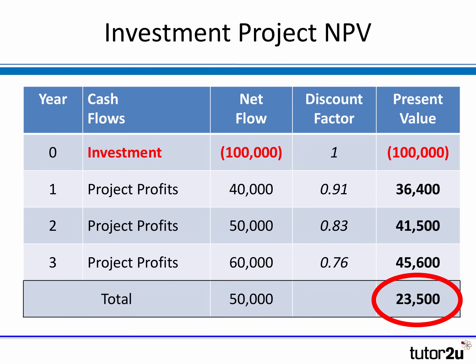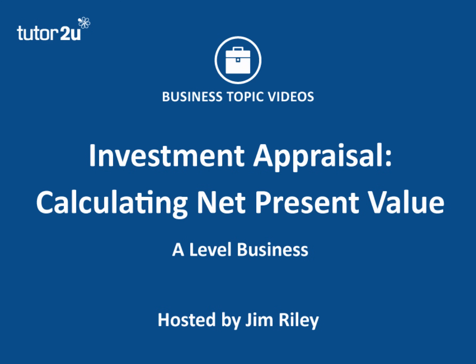As we'll see in a subsequent video, we can interpret that number in different ways, but essentially a positive NPV is usually a sign that a project is worth pursuing. So £23,500 is positive, and therefore, all other things being equal, that looks like a worthwhile project. We'll take a look at the judgments that can be made and some of the issues arising from this approach in a separate video. But for now, that's a brief introduction to how you calculate net present value.